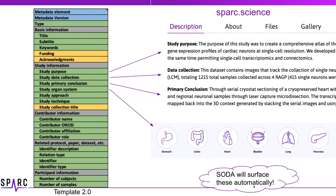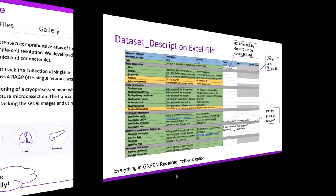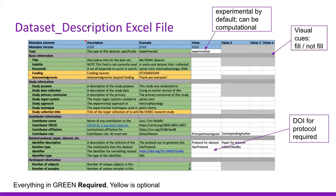SODA will actually surface some of these automatically, so you don't have to do a lot more if you're working within the SODA tool, which we very much encourage. Looking at the dataset description file: the new fields are slightly broken up a bit better. There is also a new type field, which will be filled in as 'experimental' by default for experimental datasets. If it is a computational study, you would fill in 'computational' here.